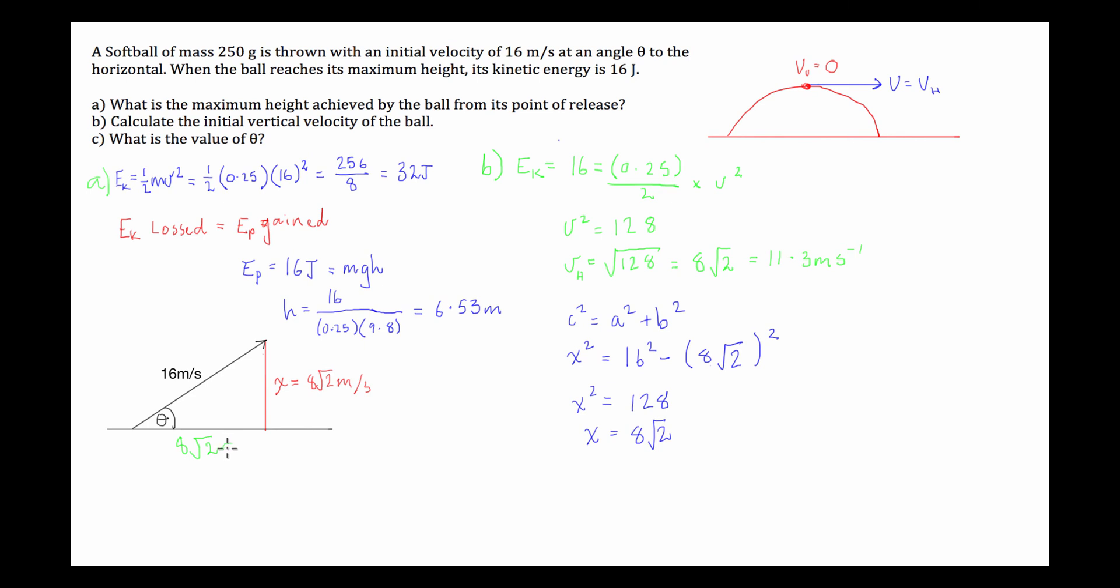Now, let me just write, make sure my units are on there. So, the answer to part b is the initial vertical velocity of the ball is equal to 8.2 meters per second.